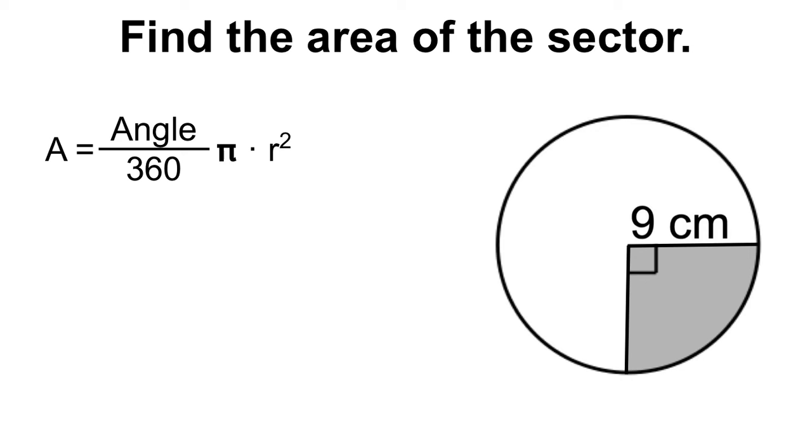So in this specific example, we've got a 90 degree angle and then we've got a radius of 9. So we would just do 90 over 360 times pi times 9 squared. If you type that into your calculator, I would definitely use the pi button on your calculator and you will get an answer of 63.62 centimeters squared.